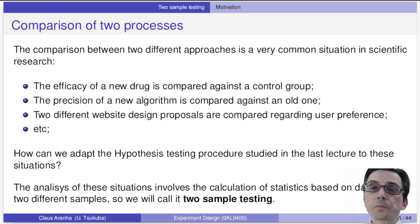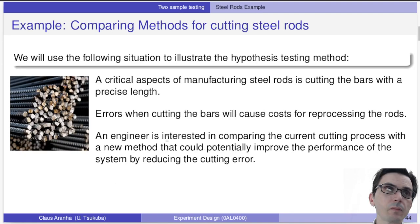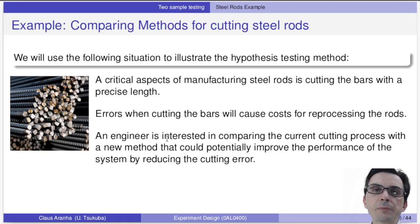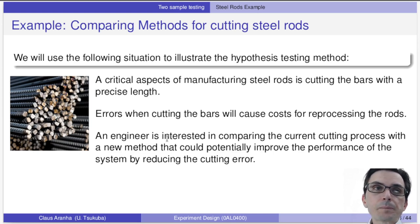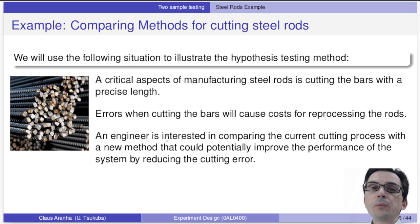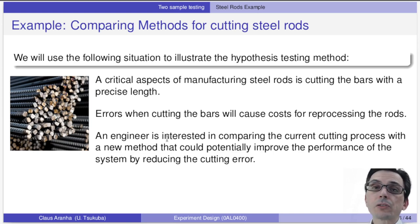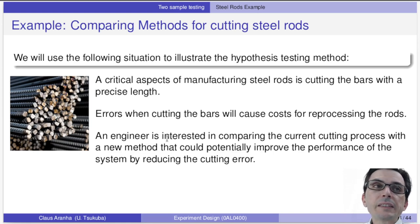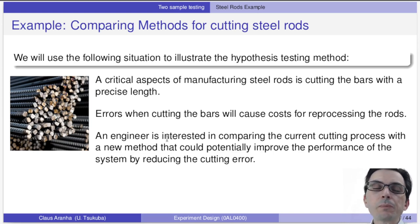This is what we call two-sample testing. Let's think about a simple experiment example. Imagine that we have a factory that produces steel rods for construction. We have two processes to cut the rods, and we want a process that produces as small errors as possible. Since this is a physical process, there's always an error — sometimes the bar is a little bit bigger, sometimes a little bit smaller — and these errors cause cost. So we want to reduce this cost and reduce the error. We want to know which method minimizes the error.